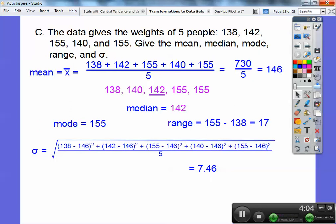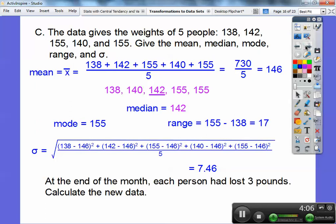Okay, all right. So at the end of the month, each person had lost three pounds, so calculate the new data. Okay, well, adding a number is the same as subtracting a number. You're just adding negative three to all those numbers. So do you remember which numbers changed, you guys? Only the mean, the median, and the mode is going to change by minus three.